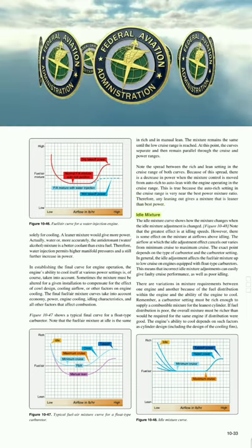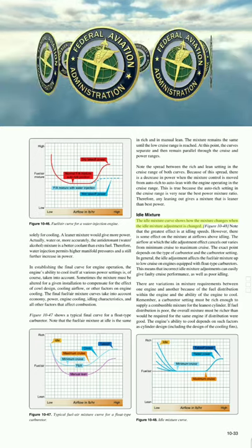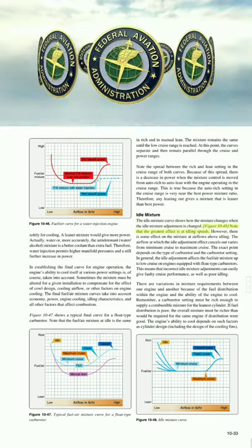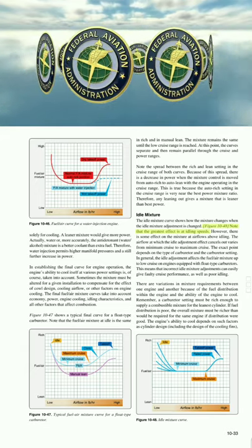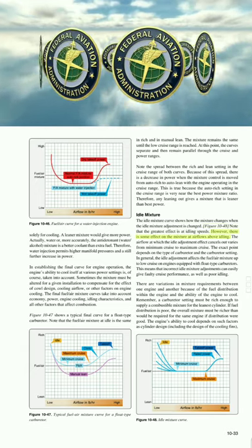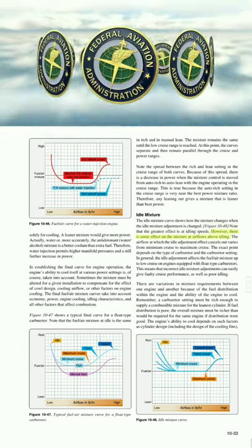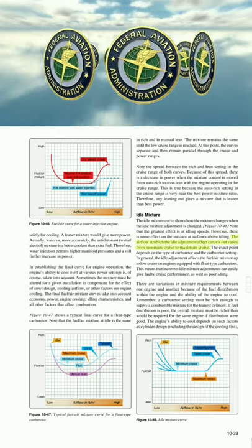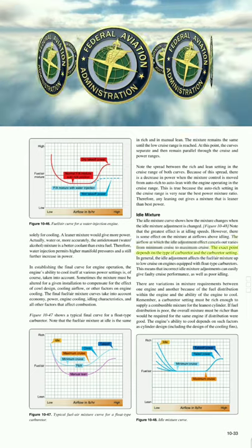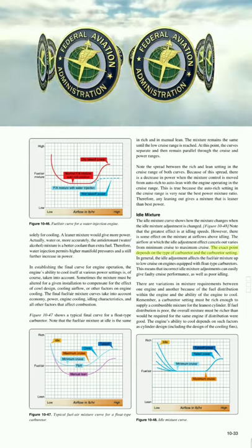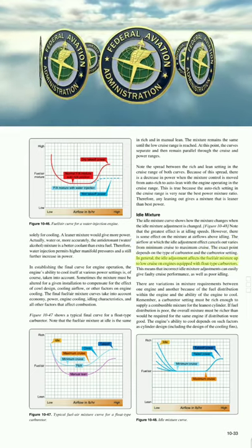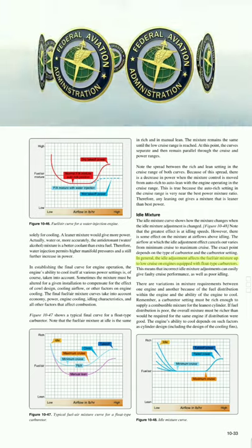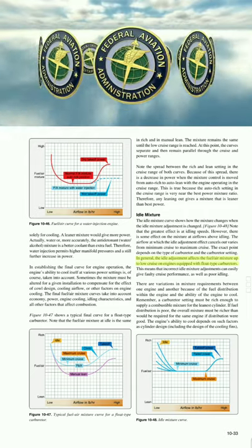The idle mixture curve shows how the mixture changes when the idle mixture adjustment is changed (figure 1048). The greatest effect is at idling speeds, but there is some effect at airflows above idling. The airflow at which the idle adjustment effect cancels out varies from minimum to maximum cruise, depending on the type of carburetor and its setting. Generally, the idle adjustment affects the fuel/air mixture up to low cruise on engines with flow-type carburetors.